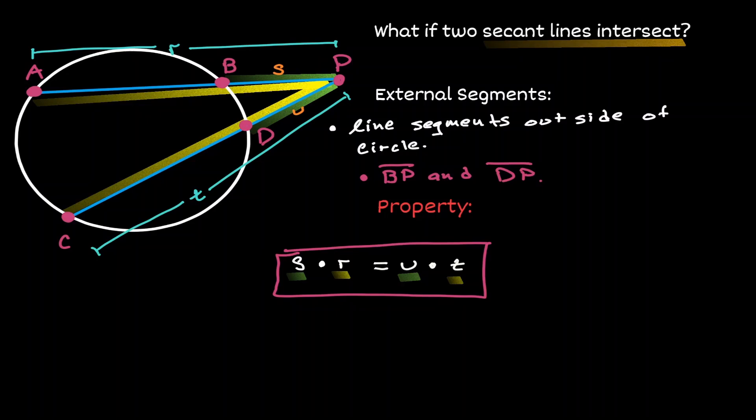The multiplication of an external line times its secant line is equivalent to the multiplication of the other external line times the other secant line. One thing to notice is that these two multiplications belong to the same secant line, and these segments also belong to their own secant line.